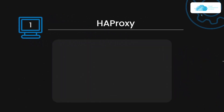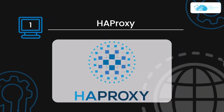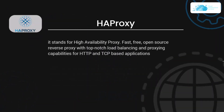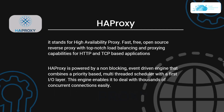At number one we have HAProxy. HAProxy stands for High Availability Proxy, which is a fast, free and open source service proxy with top-notch load balancing and proxying capabilities for HTTP and TCP based applications. HAProxy is powered by a non-blocking, event-driven engine that combines a priority-based multi-thread scheduler with the first input-output layer. This engine enables it to deal with thousands of concurrent connections easily.